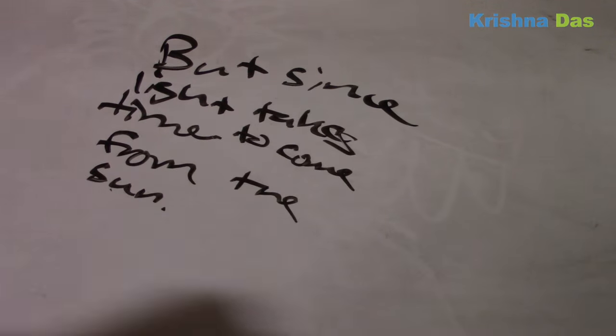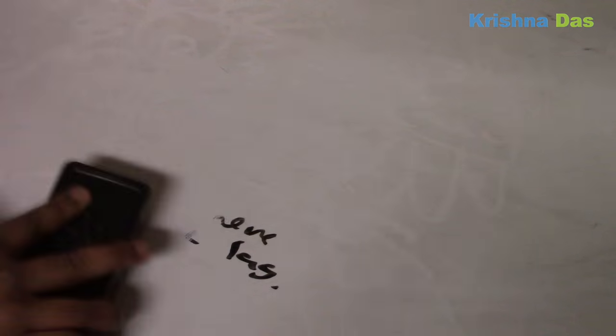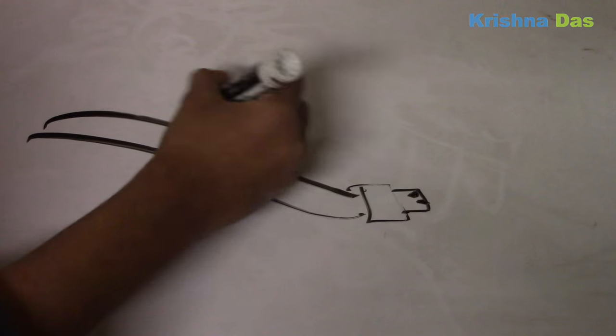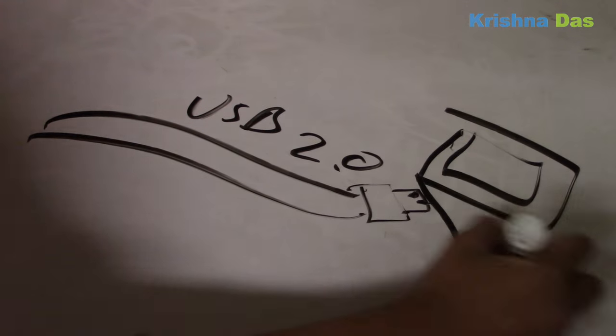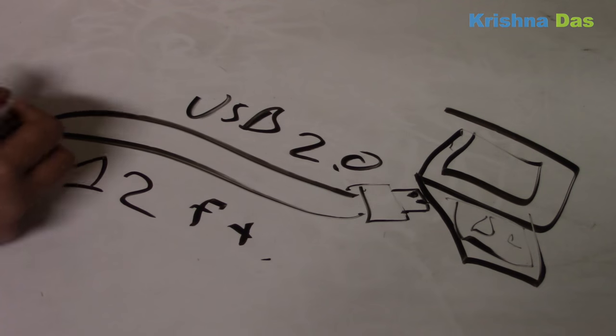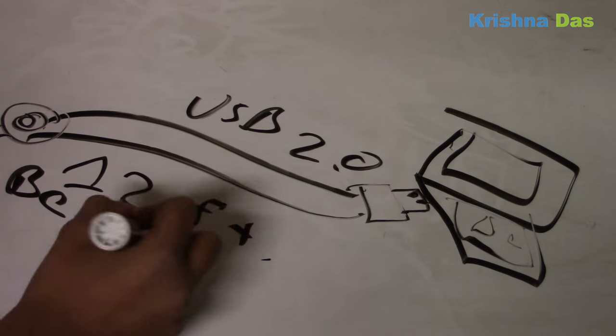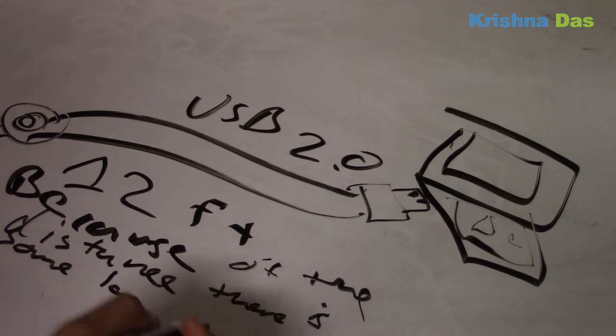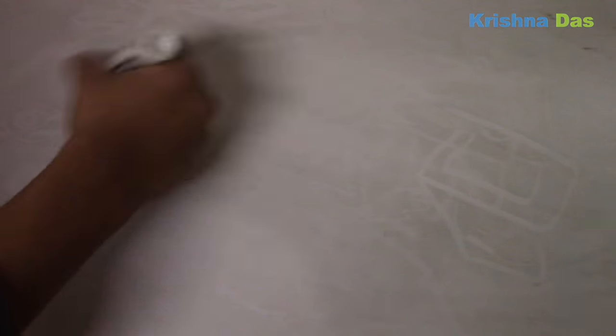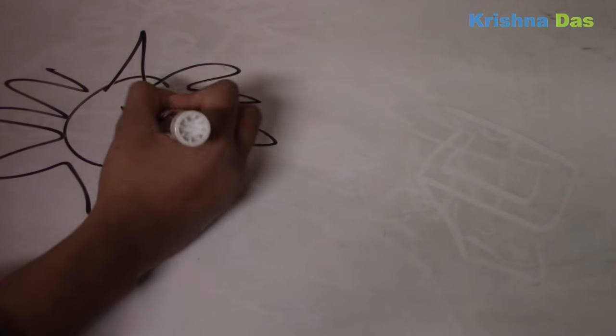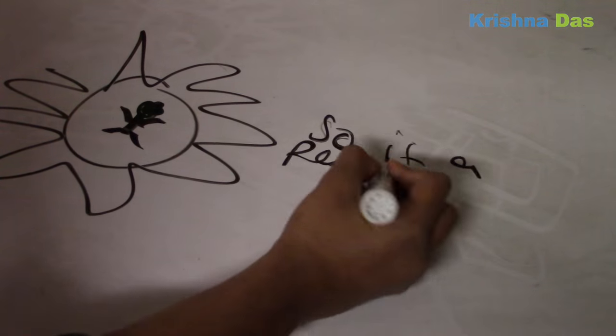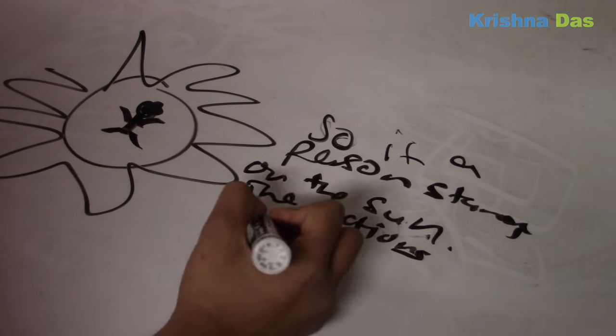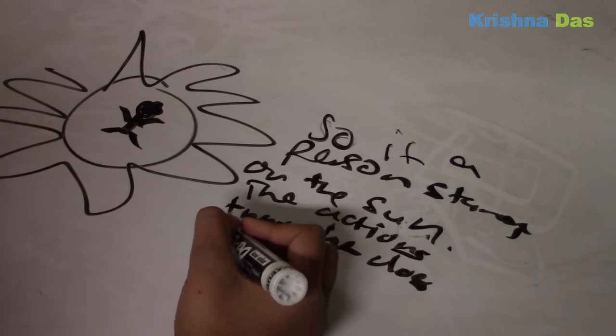Since it takes time to come from the Sun, there will be some lag, which is latency. Lag if you know and have experience about it. If you have a 12 feet long USB 2 cable, some people call it fast but it's very slow. And it's going to a webcam, it would take a longer time for data to come from that area and then from the webcam to the computer, so there will be lag. So if a person stands on the Sun, you will see 8 minutes and 20 seconds of lag.